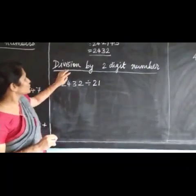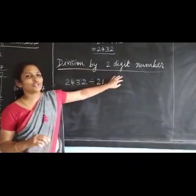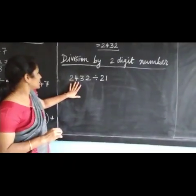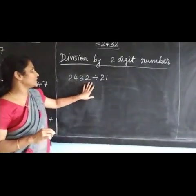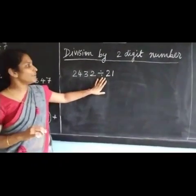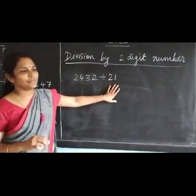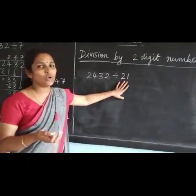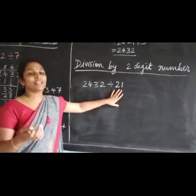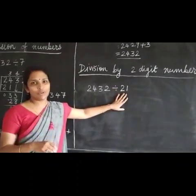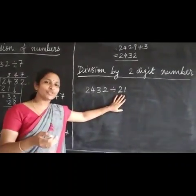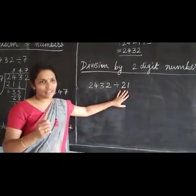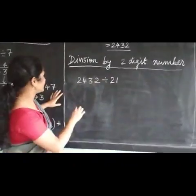Now let's do division by a 2-digit number. The problem is 2432 divided by 21. Do you know the table of 21? We don't know the table of 21, so we cannot memorize it and use it directly. So what are we supposed to do? We have to use a guessing method.